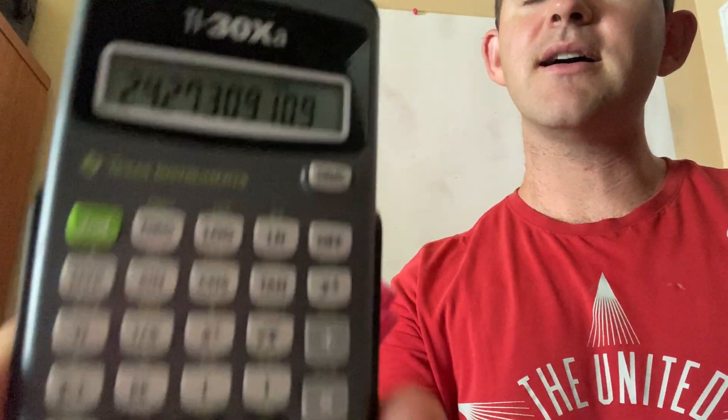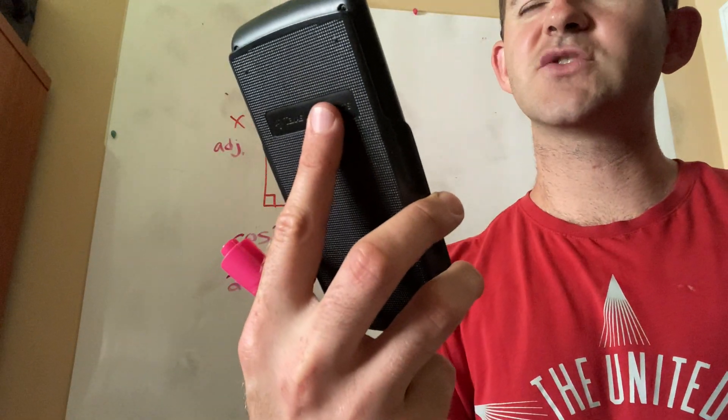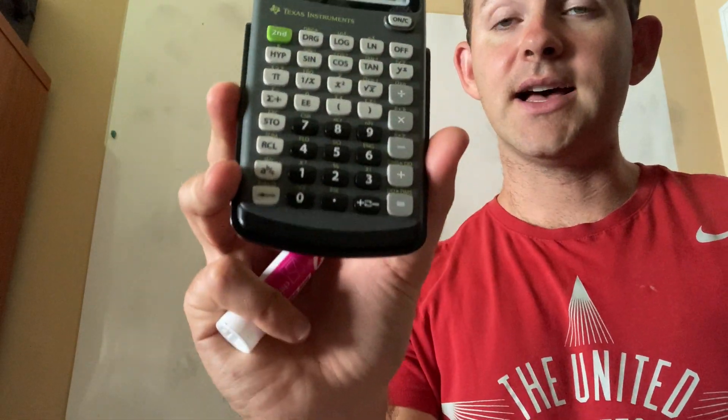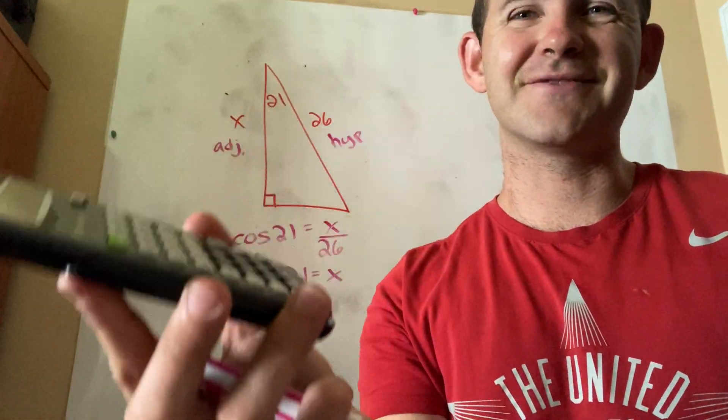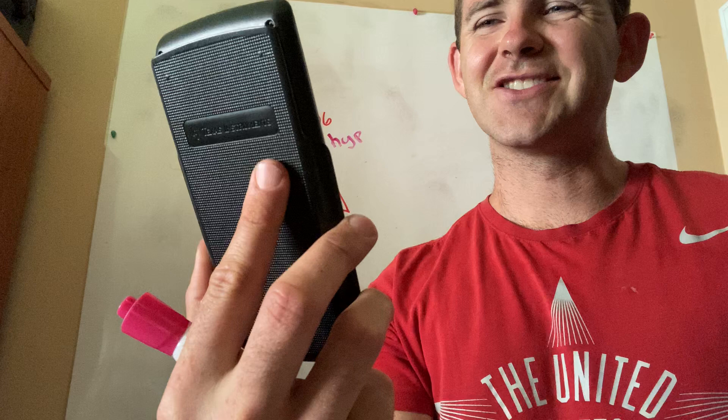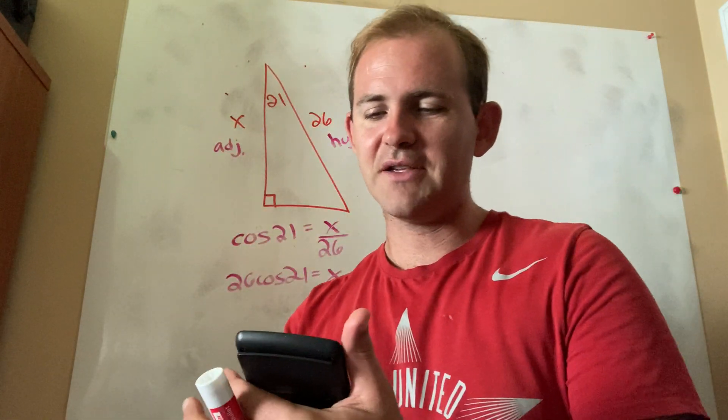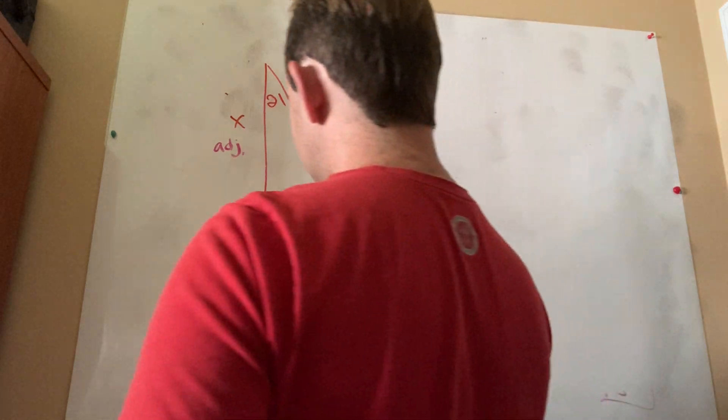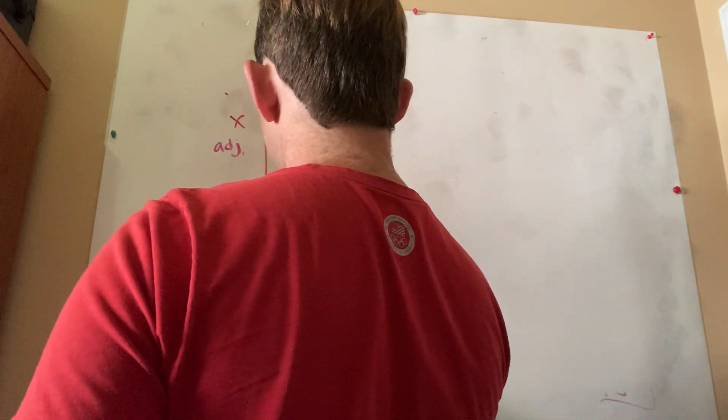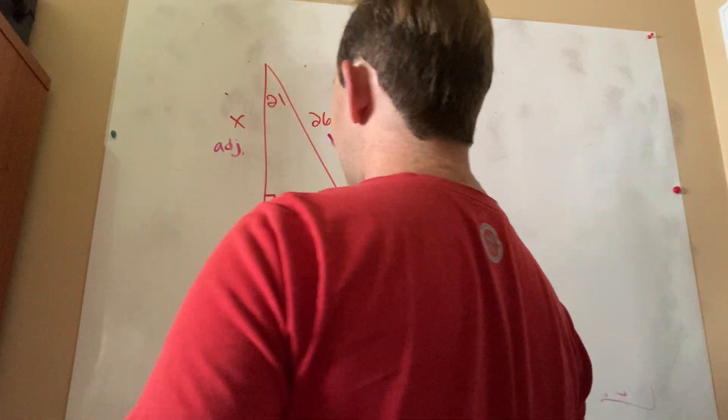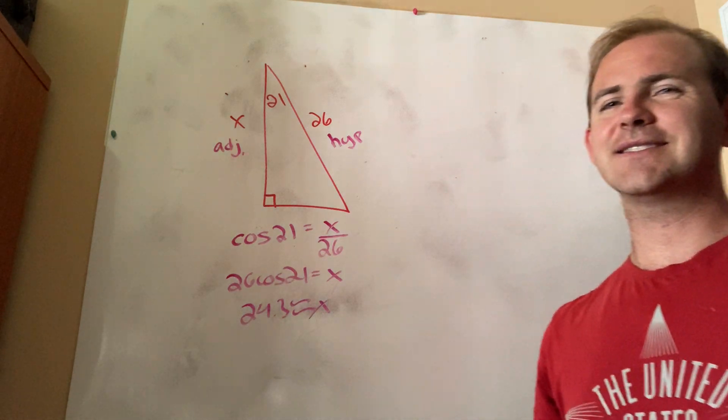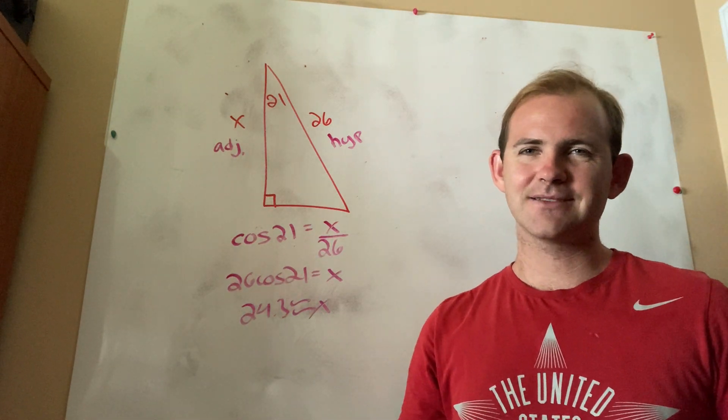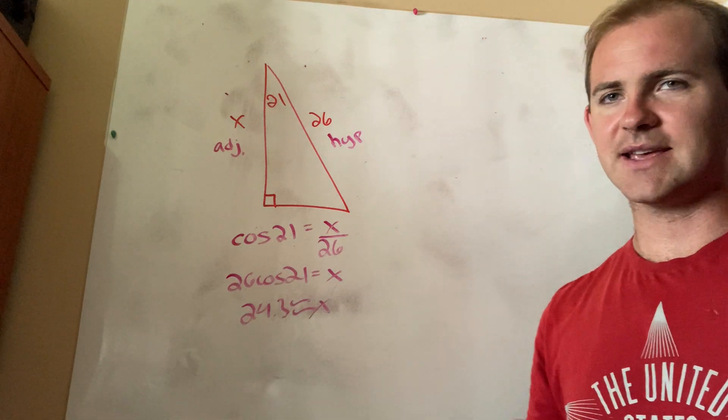So because the number, it looks like it's 24.2 something, the number after the two is bigger than five. So it's five or bigger, it's seven. And so therefore, it's going to round up to 24.3. So in this case, 24.3 is approximately equal to X. Notice why I did the kind of like wavy equal sign, because it's not exact, but it's approximate in this case.